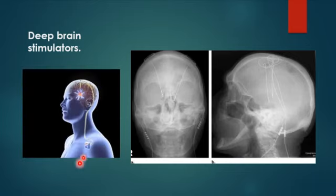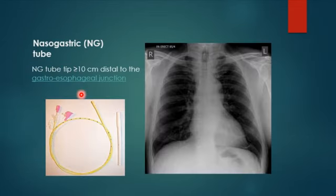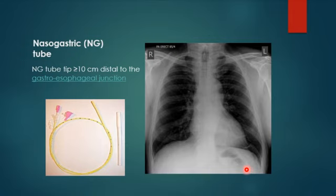This is how the deep brain stimulator is placed and how it passes directly into the brain. An NG tube passes through the nose to the stomach, with the tip positioned 10 centimeters distal to the gastroesophageal junction.